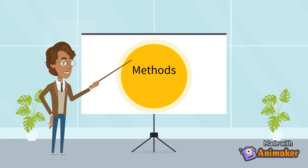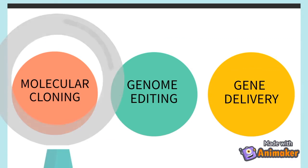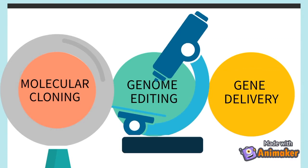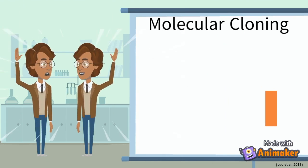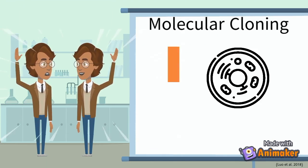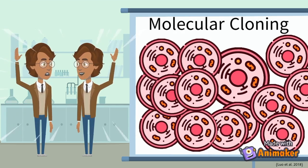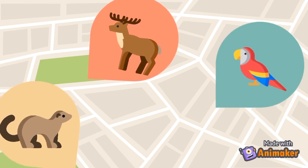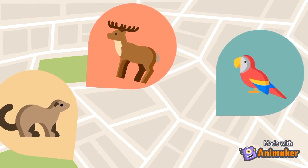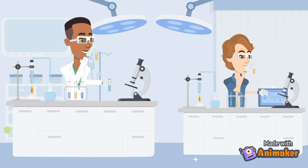Now, what techniques are used to achieve this? There are three main methods: molecular cloning, genome editing, and gene delivery. Molecular cloning is the process of getting a fragment of desired DNA, usually from a eukaryotic or prokaryotic cell, and implanting it into a carrier of the host's DNA molecule, which can replicate the desired DNA fragment. The benefits include maintaining genetic diversity, the ability for scientists to study genetic disorders, and gene therapy.